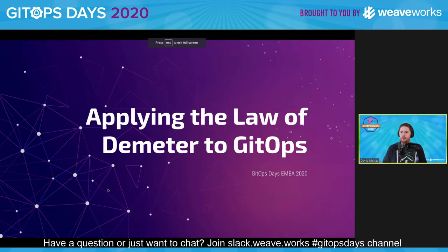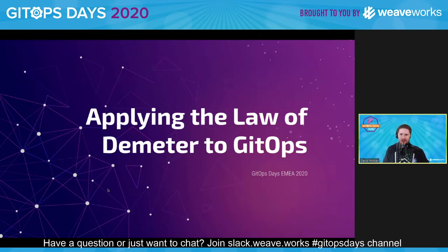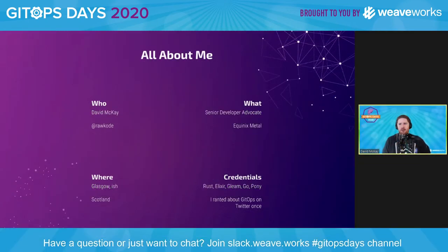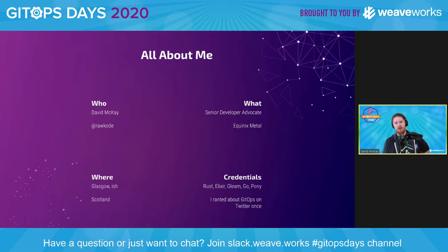Welcome. Today I'm going to talk about applying the Law of Demeter to GitOps, which I know is very abstract but hopefully will become clear shortly. A little bit about me: my name is David McKay, you can find me on the internet as Raw Code. I'm a senior developer advocate for Equinix Metal, the bare metal cloud. I'm from Scotland, roughly from Glasgow if you're familiar.